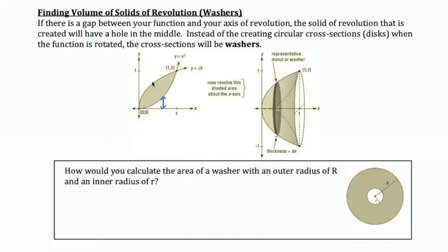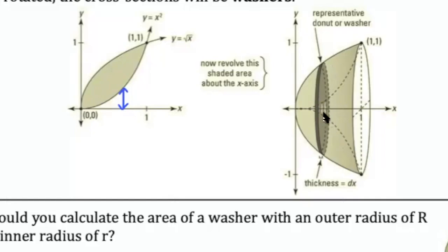So what that's going to do is the solid of revolution then is going to have a hole in the middle. Instead of creating circular cross sections, which are disks, you can see that right here at the center of this cross section, there's a tiny hole being created by that gap.